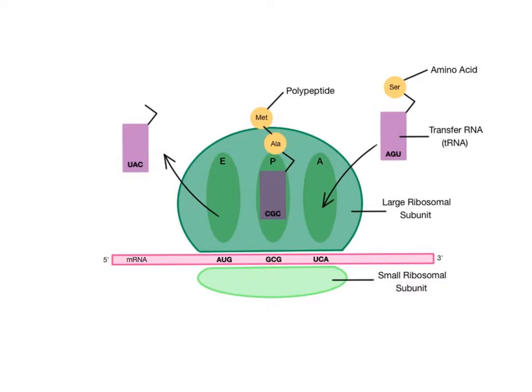The P site contains a transfer RNA molecule that has attached on its end the growing protein, or polypeptide, chain of amino acids. Think of the P site as the protein site. This area is helping to guide the assembled protein up and out of the ribosomal complex, so it doesn't interfere with the translation of the messenger RNA below.